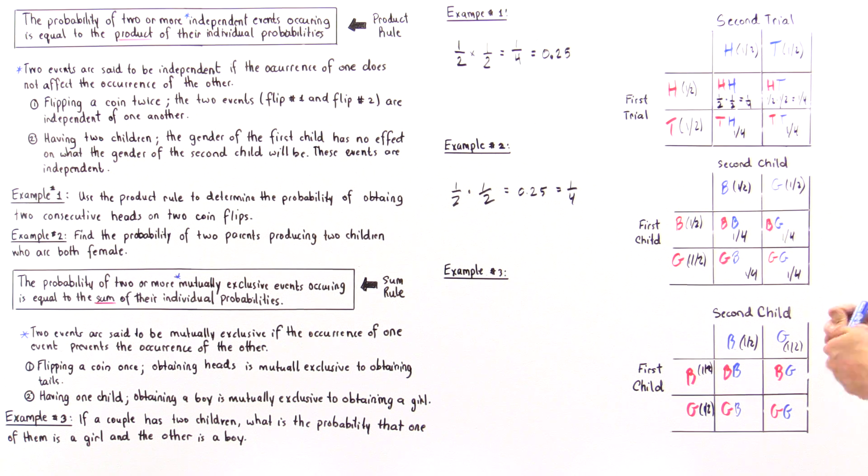Now the probabilities of these individual events taking place, because they're independent, we have to use the product rule as we used here and here. And so we have one-fourth here, one-fourth here, one-fourth here, and one-fourth here.